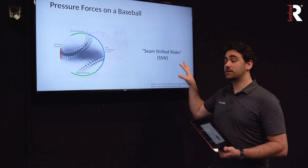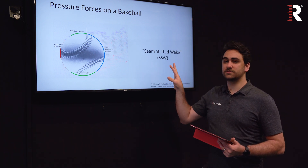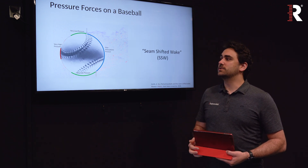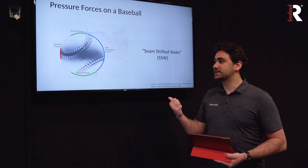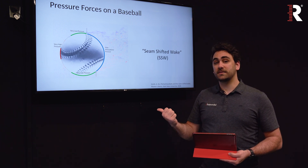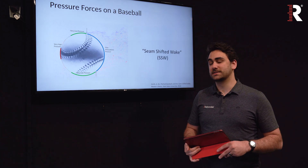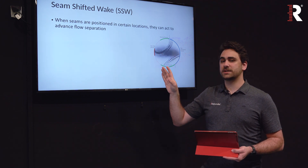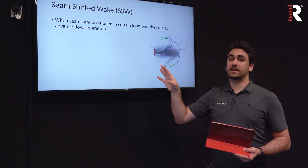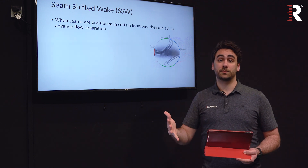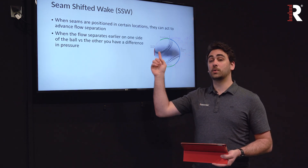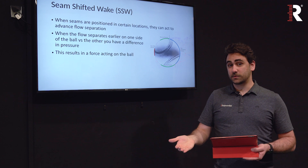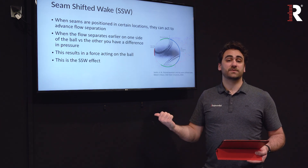The ball isn't spinning, but in this case the seams are creating that shifted wake — this is where the term seam shifted wake comes from. This research was done at the Utah State University Experimental Fluid Dynamics Lab, introducing us to this new force acting on the ball. Breaking down seam shifted wake simply: when seams are positioned in certain locations on the ball, they can advance flow separation — advance where the wake begins to form. If this happens earlier on one side than the other, you get a difference in pressure, resulting in a force on the ball.